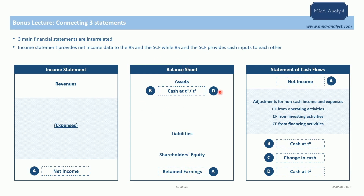You can think of this as two different balance sheets — previous year and next year. The previous year's cash (B) will be used to find the cash amount in the following year. We plug in this previous year's closing cash amount into the statement of cash flows as cash at T0.